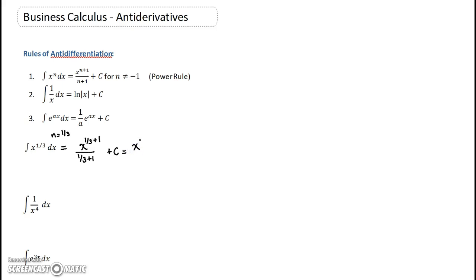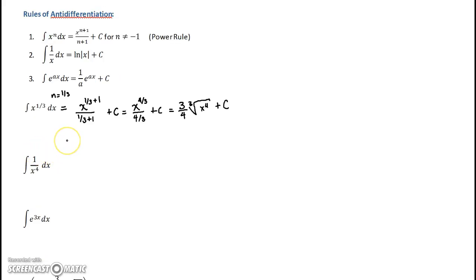And if you want to make it look even nicer, and then these 4 thirds you're dividing by it, you can multiply times its reciprocal. So you're going to have 3 fourths and then you could write something like the cubic root of x to the 4th plus C. All right, and that gives you your antiderivative. If you would take the derivative of that, you would go back to x to the 1 third, and that would mean that that is the antiderivative.